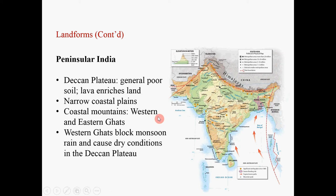The Peninsular India. The most important geographical feature in Peninsular India is the Deccan Plateau. In terms of its agricultural potential, this part is not very favorable. The land is poor — it is sandy, does not retain water very well, and has become very eroded by local rivers, cut into a very fragmented structure.